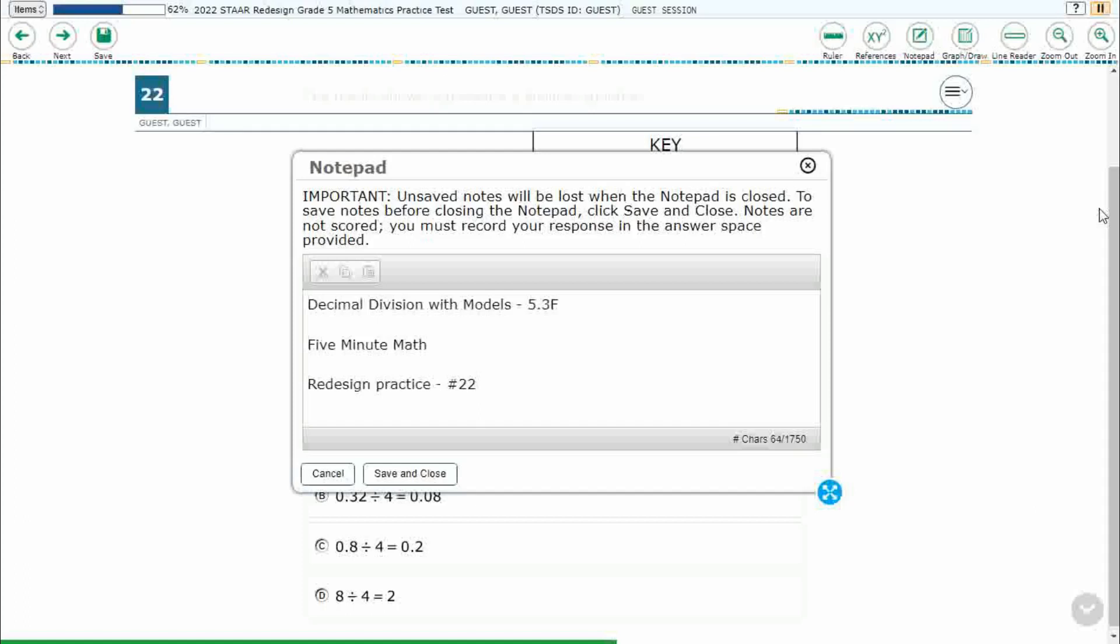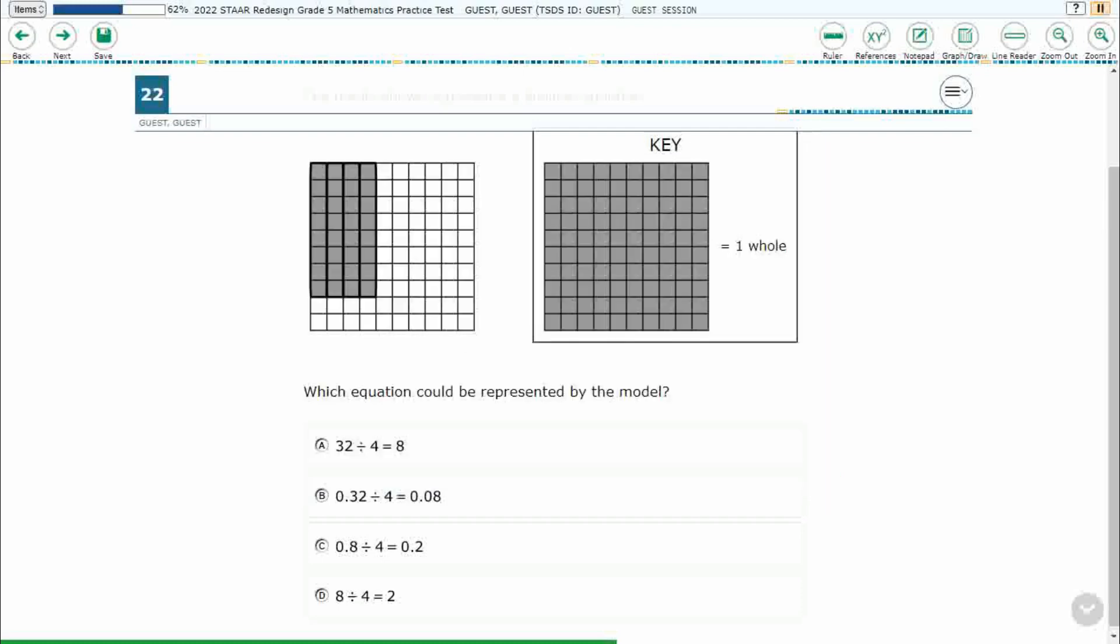Hello and welcome to 5-Minute Math. Today we are looking at the fifth grade concept of decimal division with models. This is standard 5.3F in the great state of Texas, and we are using item number 22 of the redesigned practice online STAAR test.